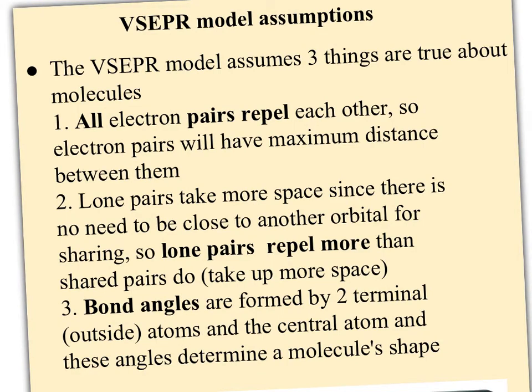So the VSEPR model makes three assumptions. The first assumption is that all electron pairs repel each other. That's the idea that you're going to find the two electrons within an orbital maximum distance apart, and then that pair of electrons is going to be maximum distance from their neighbors. So all electron pairs are going to have the maximum distance between them.